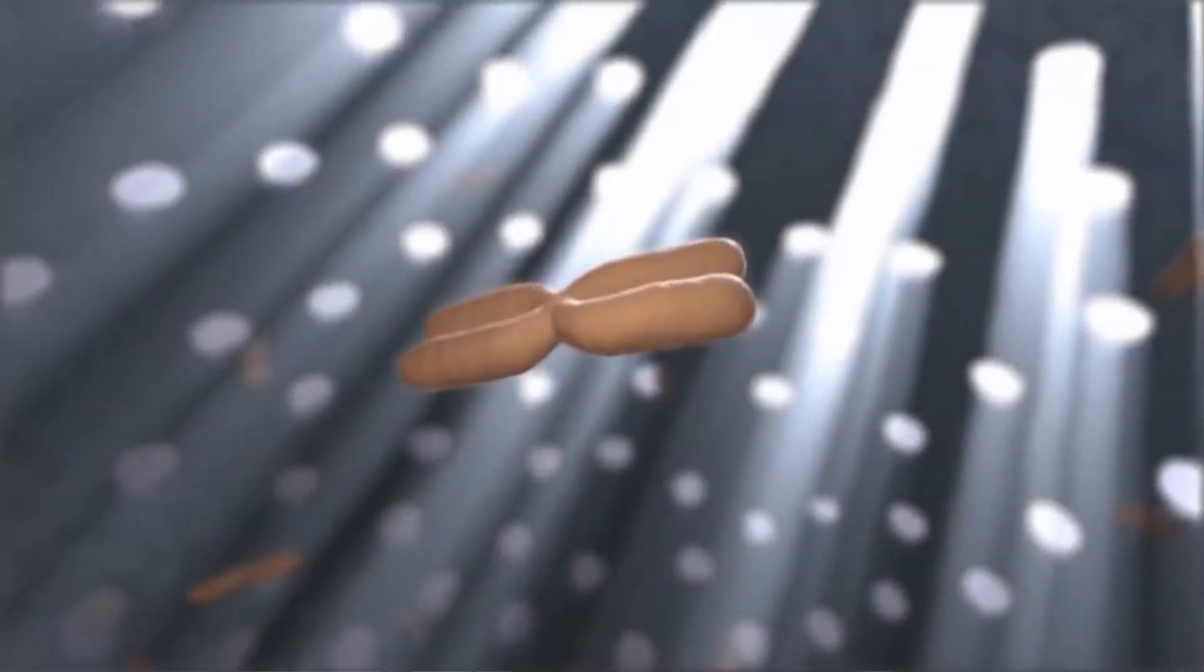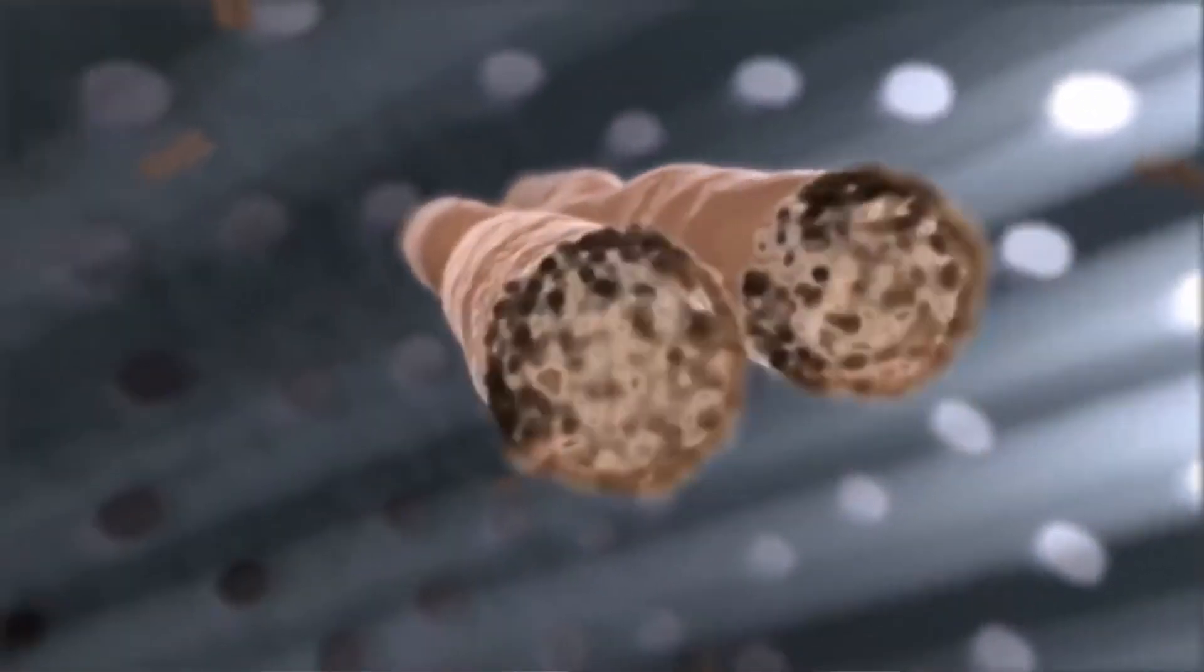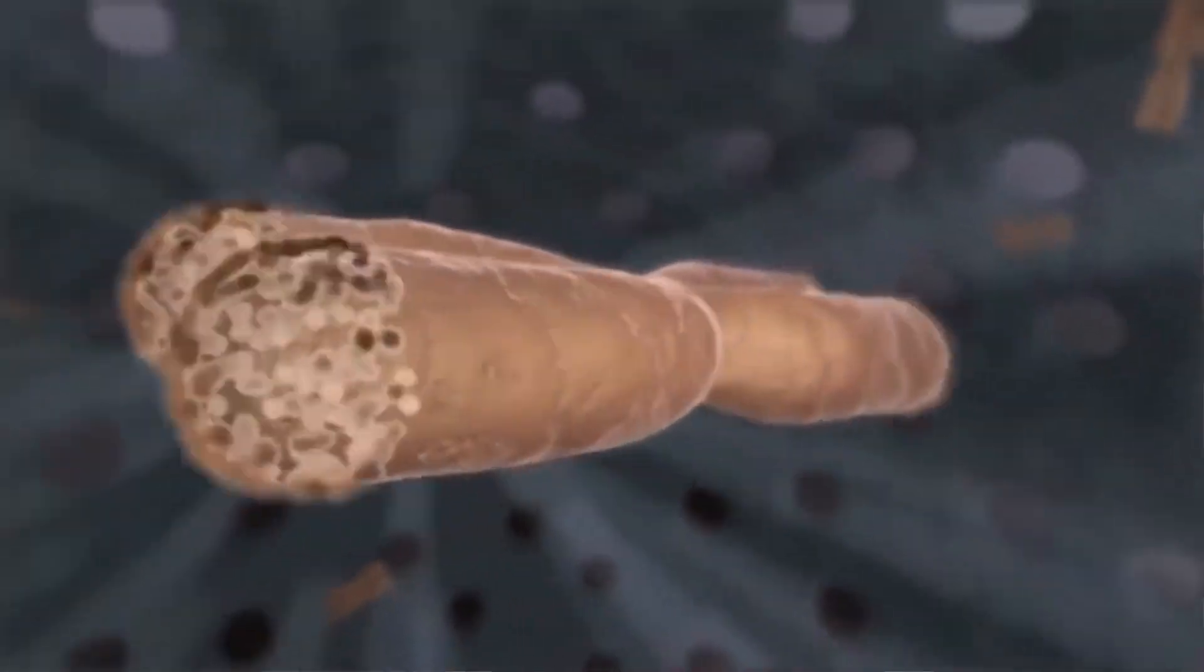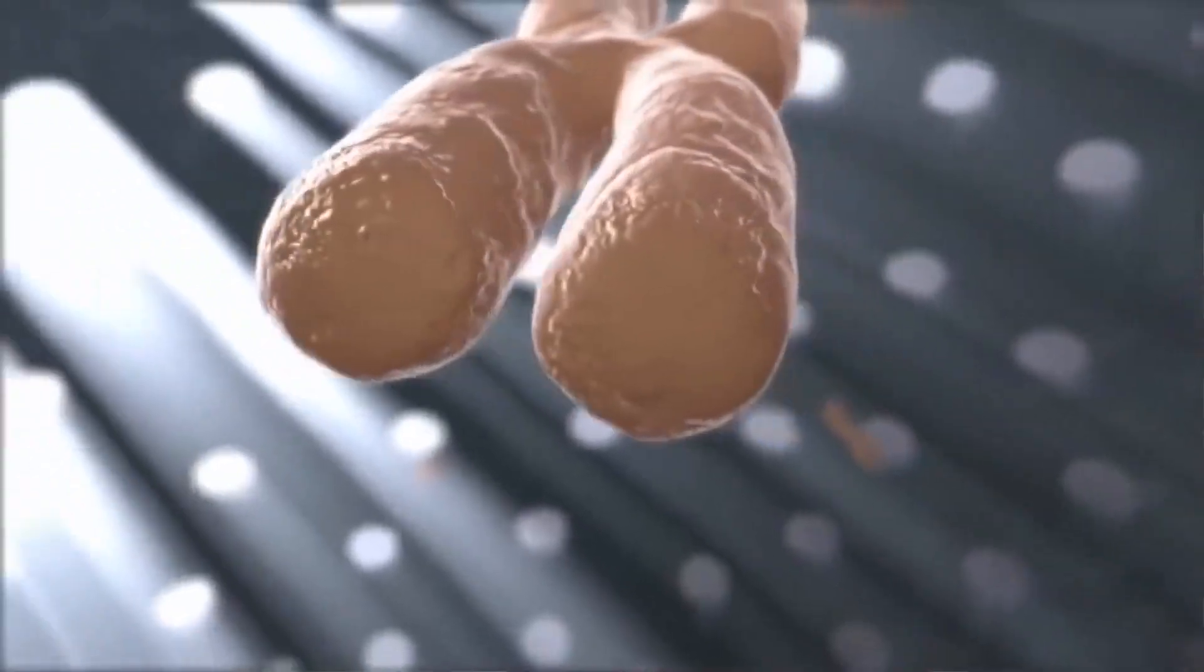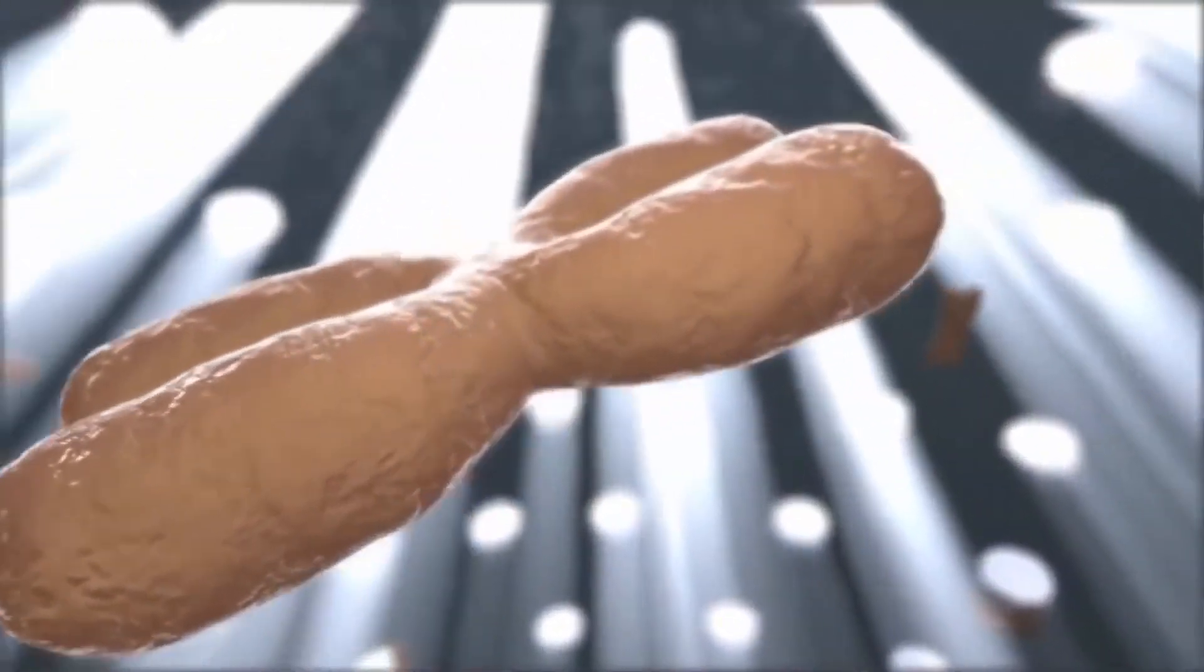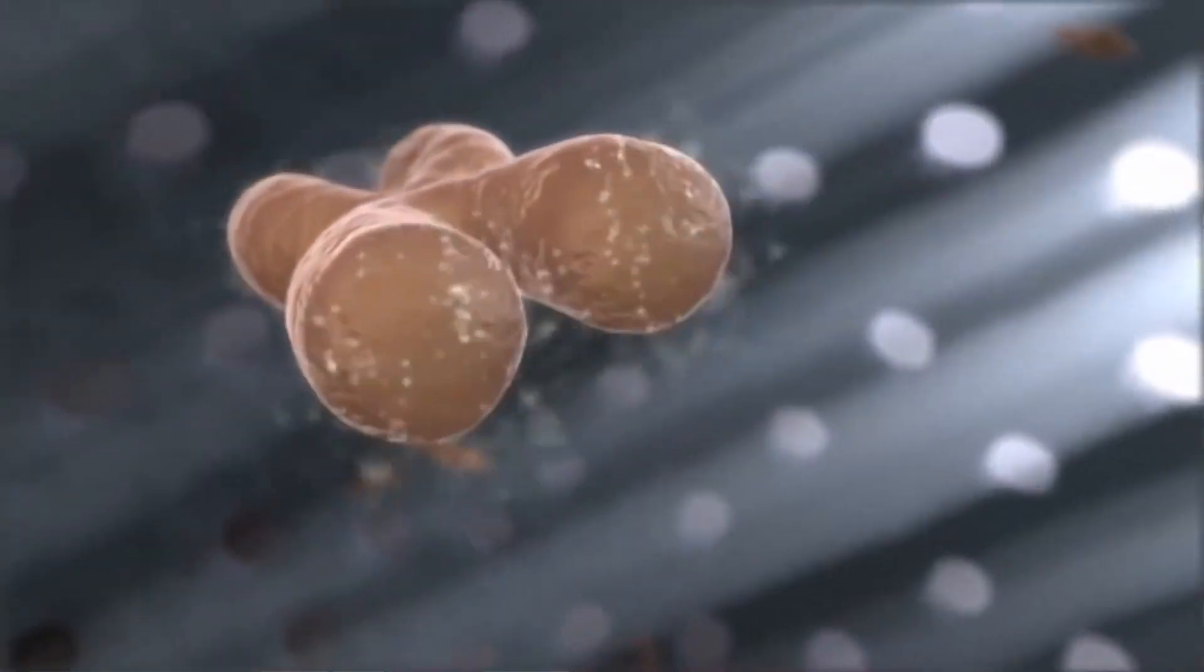When the telomeres of a living being run out, their cells begin to grow old, concluding this process after a short time with death or degenerative diseases that soon end up being lethal. And while you're watching this video, your telomeres are running out. Little by little, but without ever stopping. And what do cancer cells do to avoid this process? To be immortal?